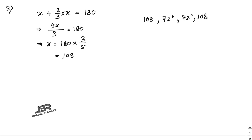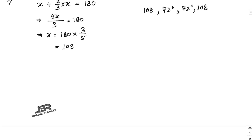The other two angles are also 108° and 72° respectively, because opposite angles in a parallelogram are equal.